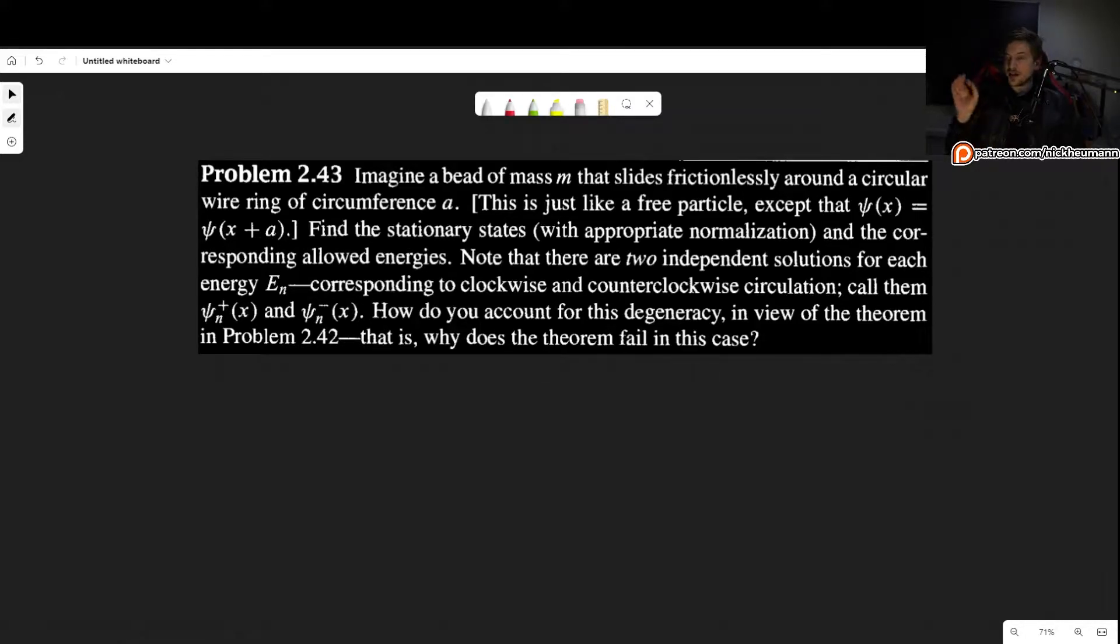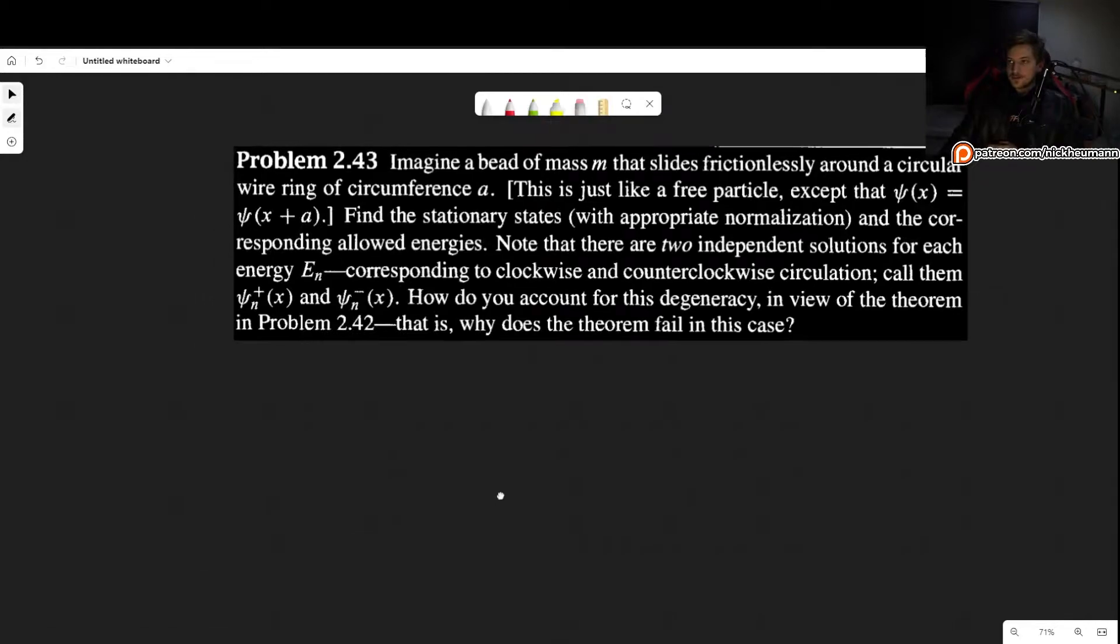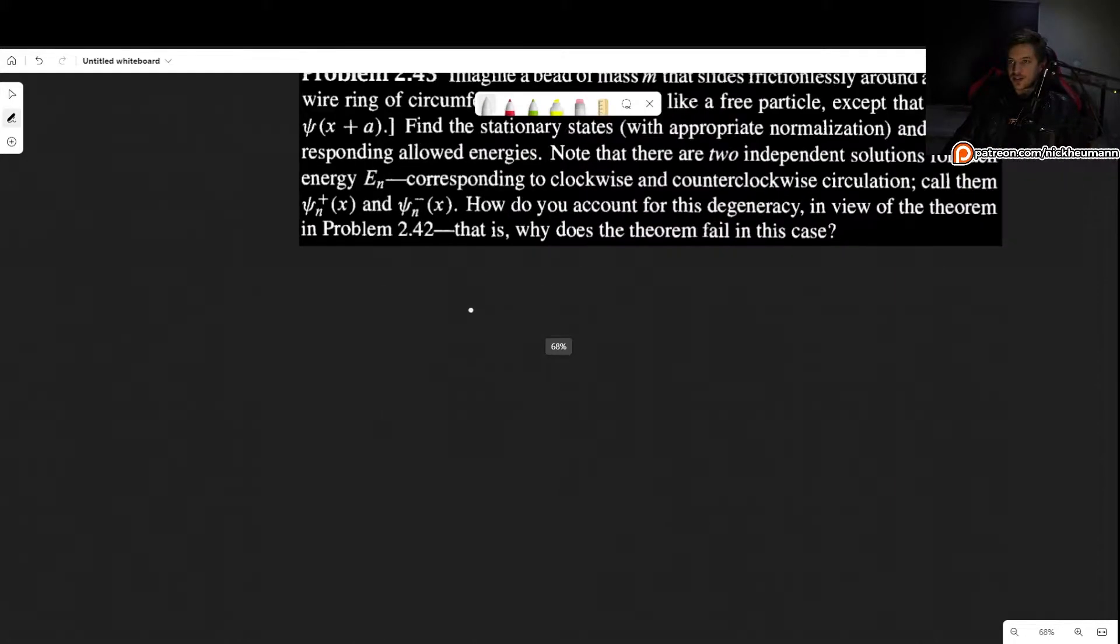With this in mind, we want to find the stationary states with appropriate normalization and the corresponding allowed energies. Note that there are two independent solutions for each energy corresponding to clockwise and counterclockwise circulation. Call them ψ+ and ψ-. How do you account for this degeneracy in view of the theorem in problem 2.42? That is, why does the theorem fail in this case?